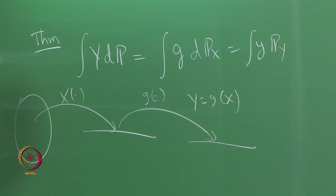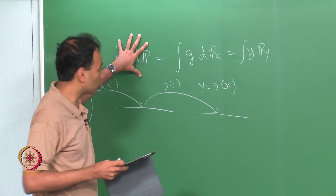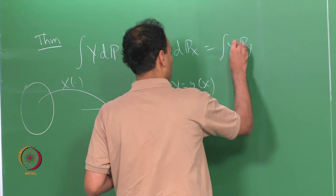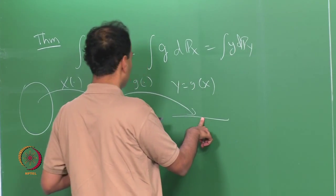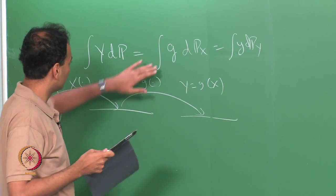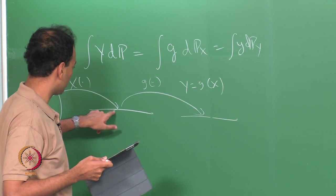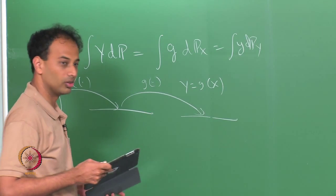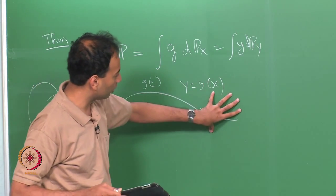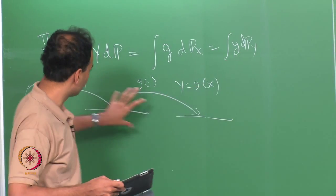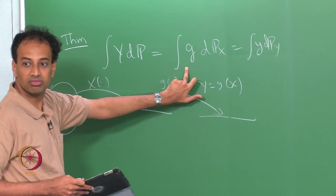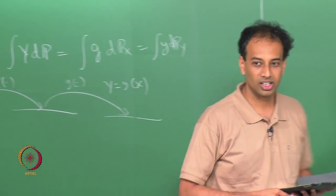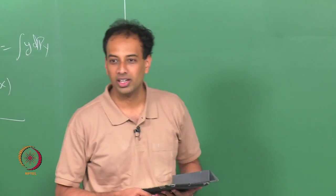So, this theorem is saying that you can either compute the expectation of y by integrating on one space or you can integrate on this other space. Basically, you can compute integral g d p_x with the probability law here. So, you can either go ahead and find the probability law of y and integrate this, or you can just keep the probability law of x and integrate g. They are equal. This is something you probably use without really knowing why it is true.